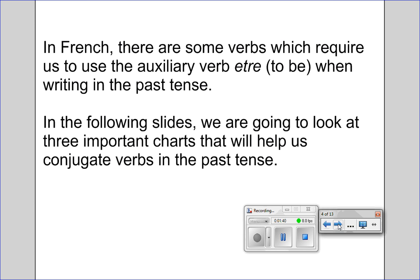In French, there are some verbs which require us to use the auxiliary verb être — that means 'to be' — when writing in the past tense. In the following three slides, we are going to look at three important charts that will help us conjugate verbs in the past tense. I would like you to have a smartphone or tablet nearby where you can take pictures of these slides, because you're going to want to use them for reference when we get to the activities in the second half of this video.